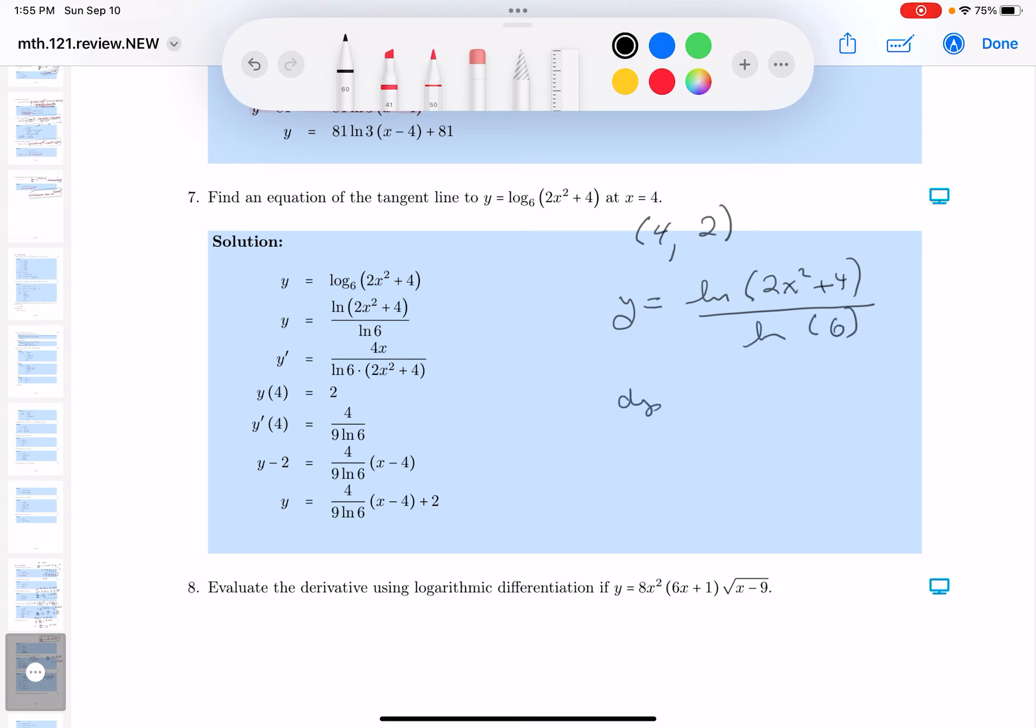Now I want to write down dy dx. And what's that going to be equal to? Let's be careful here. It's going to be 1 over the argument. Before I do anything, I know there's a constant of ln 6 in the bottom. What's the argument going to be 2x squared plus 4?